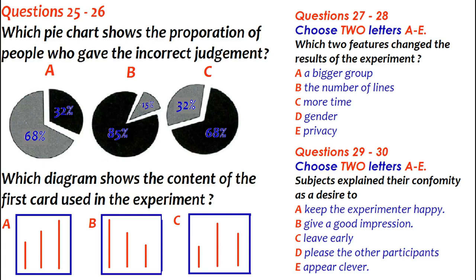Subjects gave various explanations for why they made the decisions they did. Although they weren't put under pressure by the experimenter, many felt that they would somehow spoil the experiment and upset the person running it if they didn't agree, no matter how stupid they felt. More simply, in other cases, they said they just wanted to not show themselves in a bad light. Whatever the reason, Asch's experiment has had a long history.